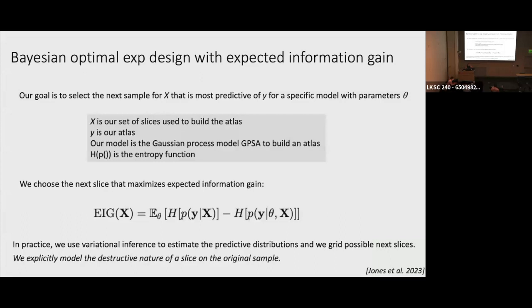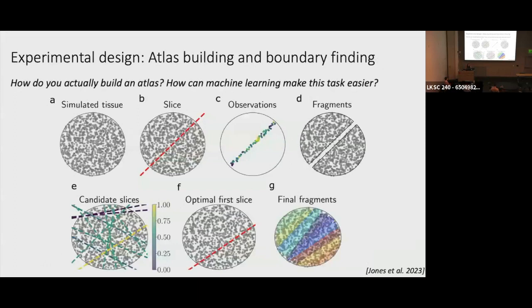Done greedily, this enables sequential experimental design — sequentially choosing the best slice. In practice we use variational inference to estimate the predictive distribution. There are a lot of slices we could choose: we grid the space with many different angles and possible slices and select from a thousand of them. We also explicitly modeled the destructive nature of a slice on the original sample — as I showed, if you slice a sample you cannot have a subsequent slice go through those two halves; it has to be on one of the sides.